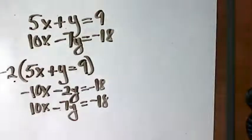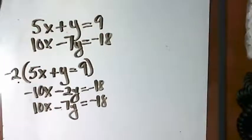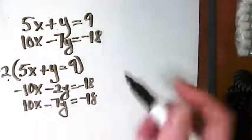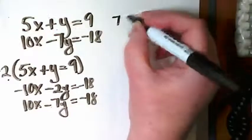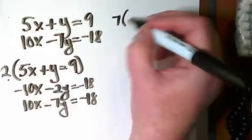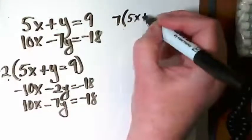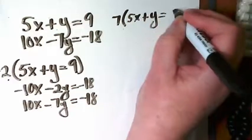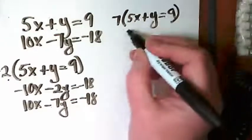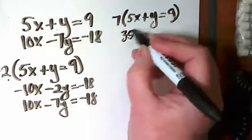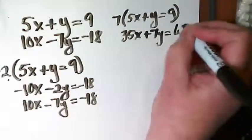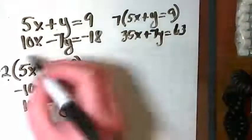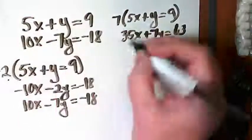I'm not going to solve it yet. I want to show you there's another way I could have started it. I could have taken the first equation and multiplied it times 7. And I would have gotten 35x plus 7y equals 63. Then I would line up the second equation.